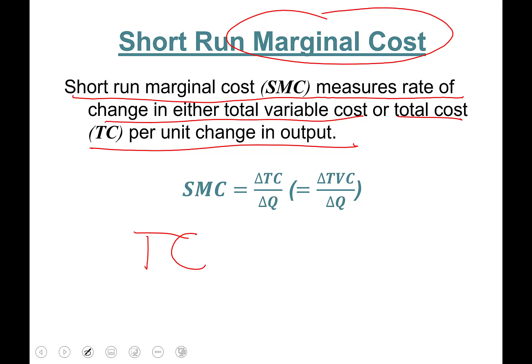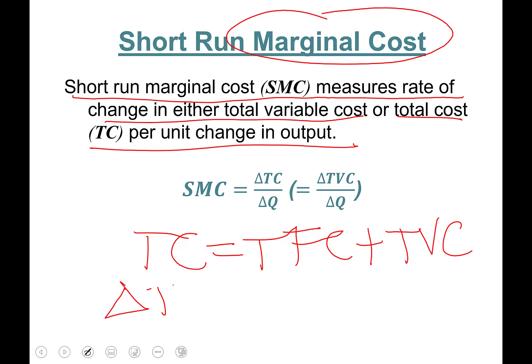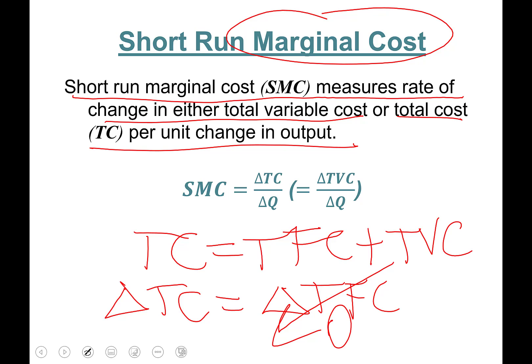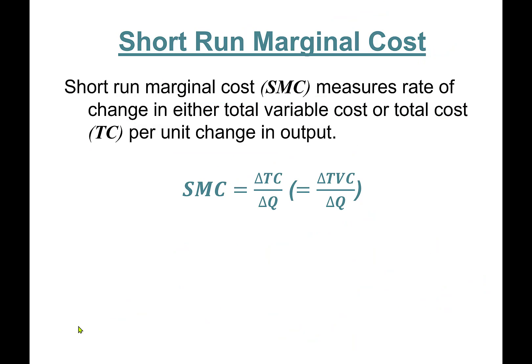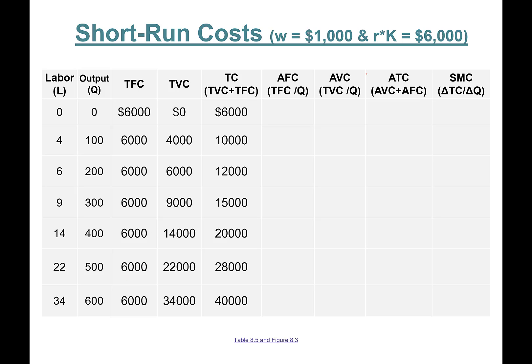This is because total cost equals total fixed cost plus total variable cost. The change in total fixed cost is zero since fixed cost never changes. Therefore, short run marginal cost can be calculated as either change in total cost divided by change in quantity, or change in total variable cost divided by change in quantity — they are exactly the same thing.